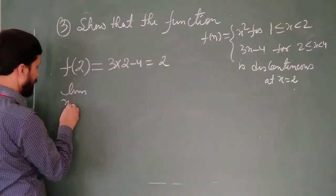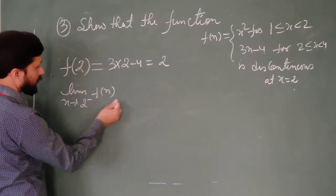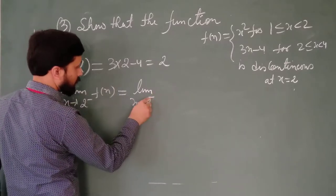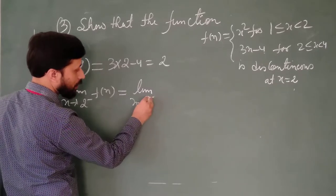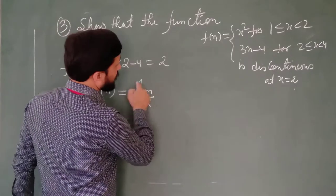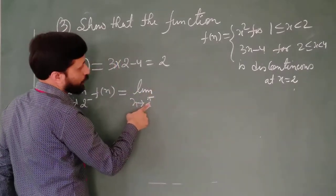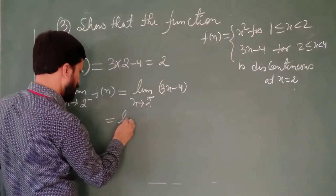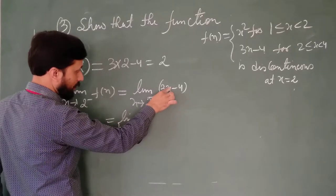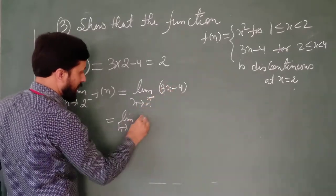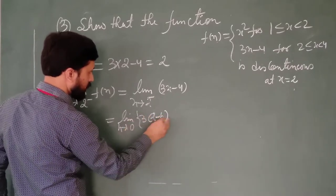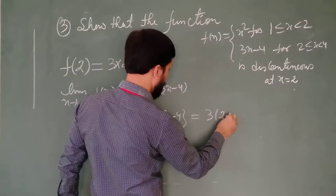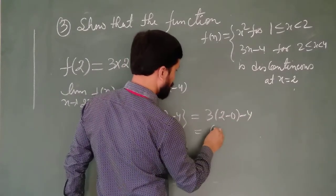Now find the left hand limit: limit x tends to 2 minus f(x). The superscript minus on 2 represents your left hand limit. For x less than 2 we have this expression. We replace this with h approaches to 0, and in place of x we put 2 minus h. Put this in the bracket and put the value of h as 0: 3 times (2 minus 0) minus 4 equals 6 minus 4, which equals 2.